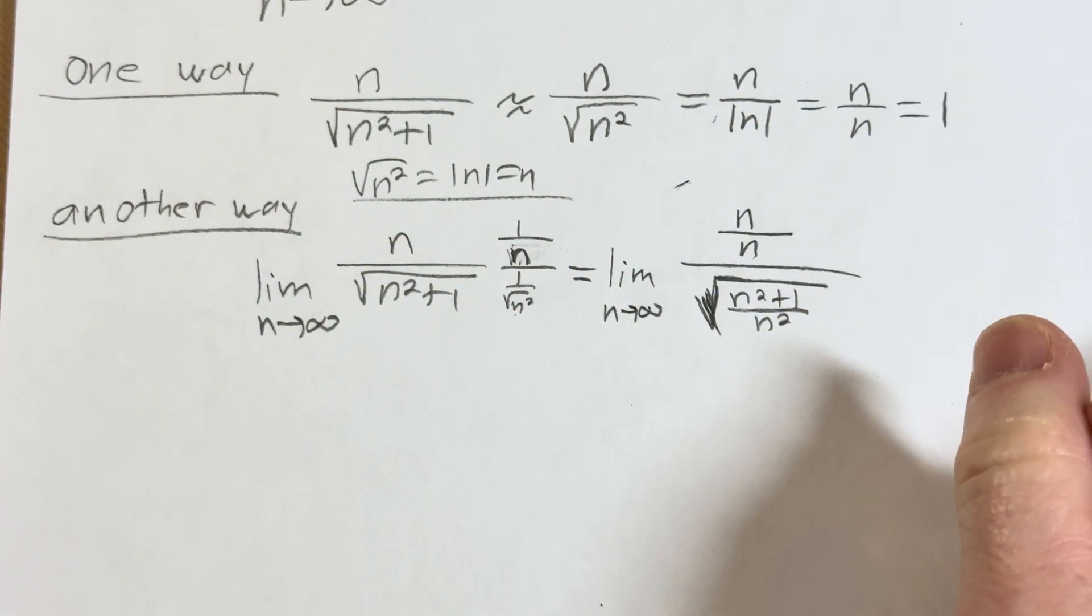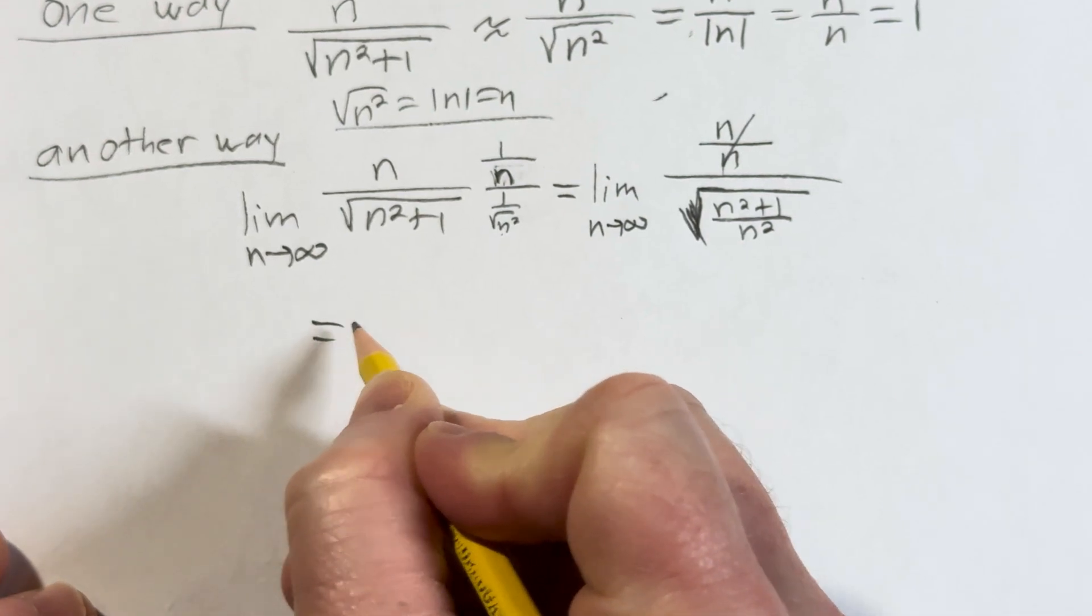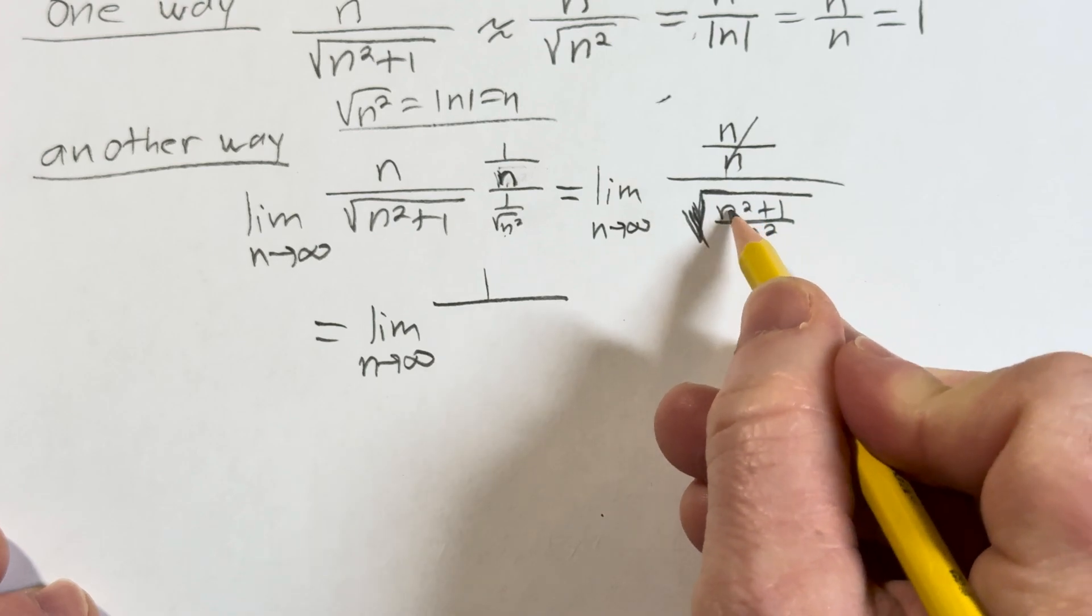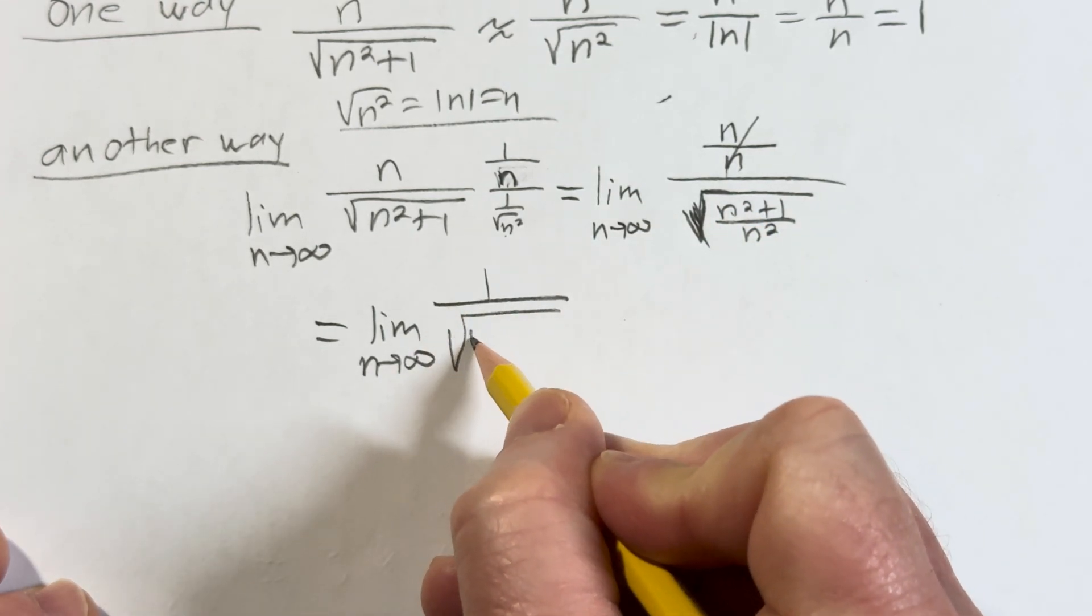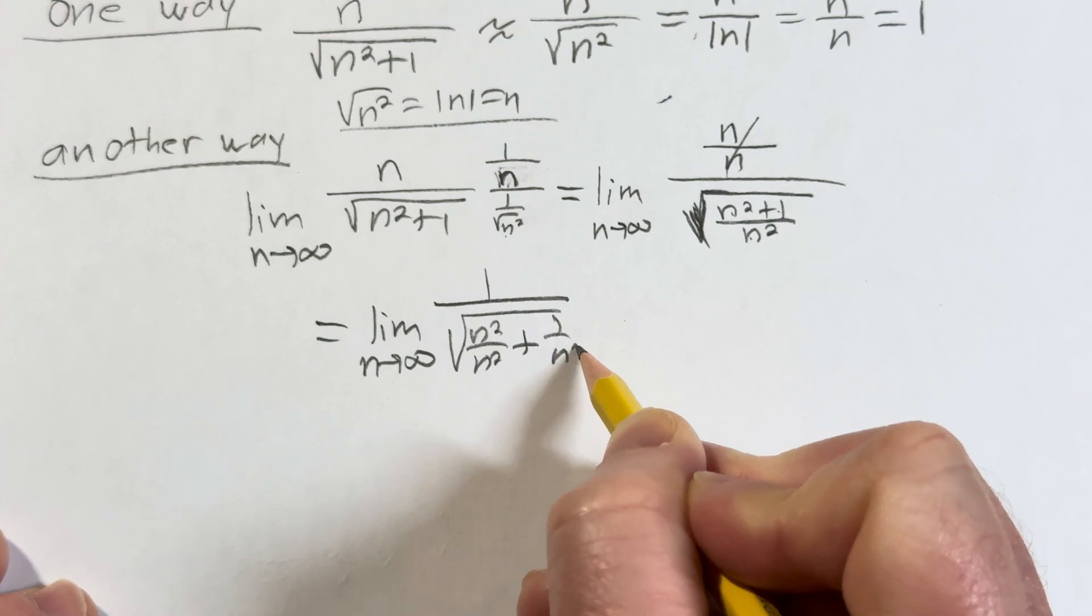Now it's in a big square root. Isn't that cool? So boom, here we go. Yes. Yes. One over, and then it's n squared over n squared. Plus, and then one over n squared. Really cool, right?